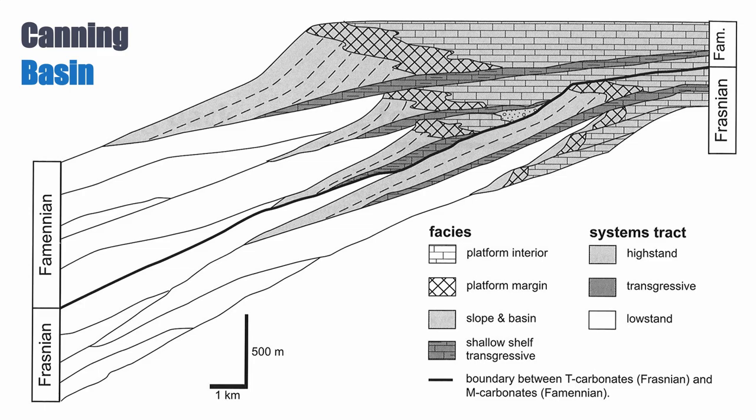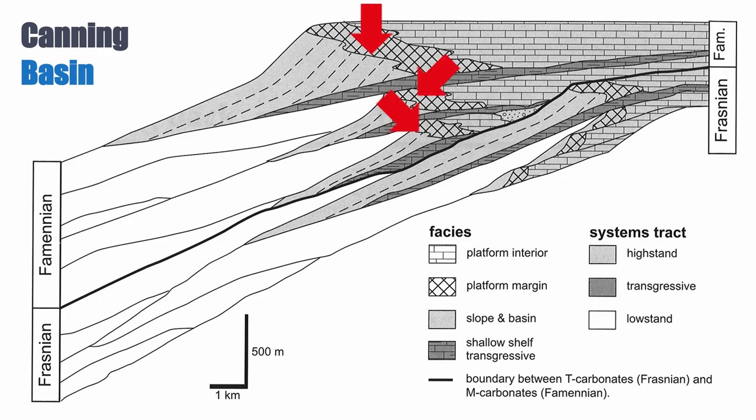So essentially in the Frasnian, which is the older sequence, we have T factory, and in the Famennian, the younger sequence, we have M factory. And their geometry is completely indistinguishable.